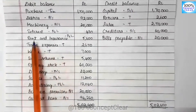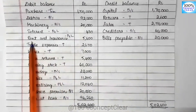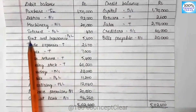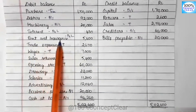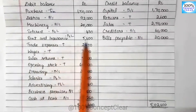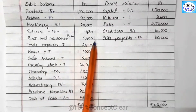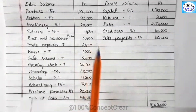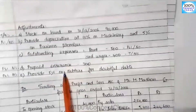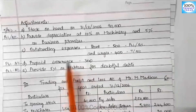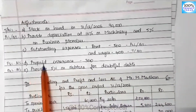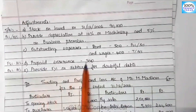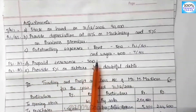Let's see what we have in the trial balance. Rent and insurance is $5,600. Look at the adjustment — there is a prepaid insurance amount of $300.